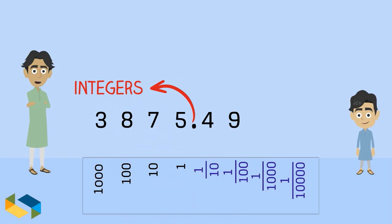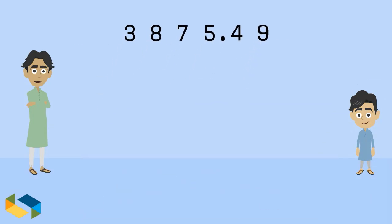This symbol here separates the integers part of the number from the fractional part. So there is what is called a decimal number.